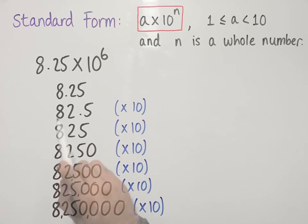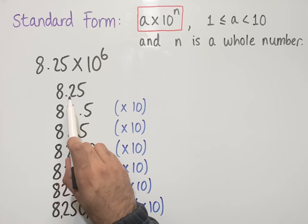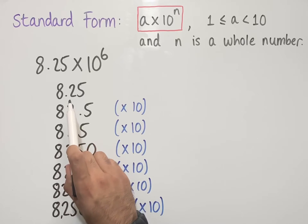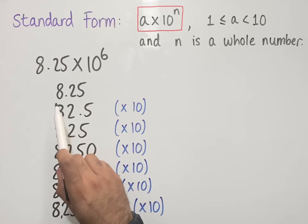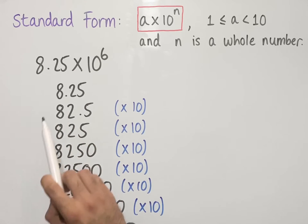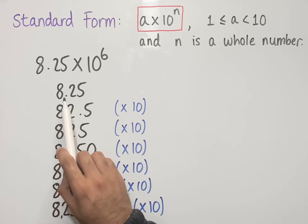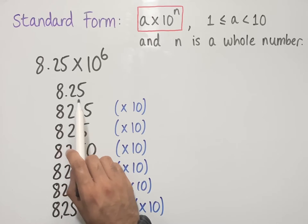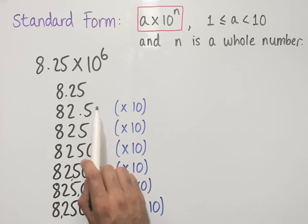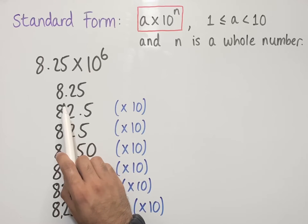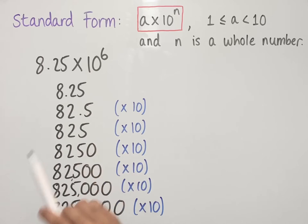Notice how at every step each digit has moved one place value to the left. Another way we can think of this is that every time we multiply by 10, the decimal point moves one space to the right.